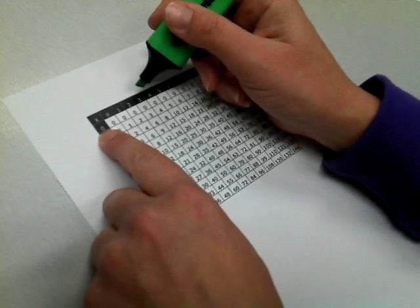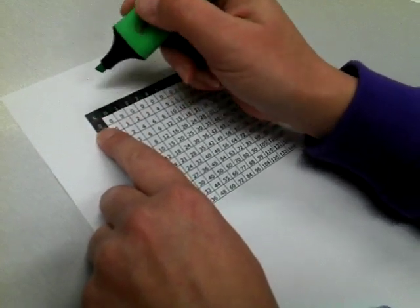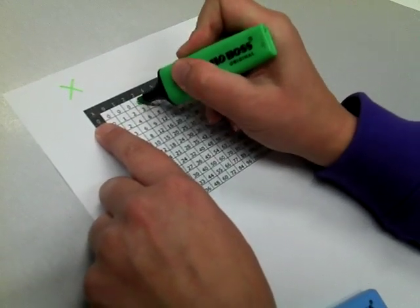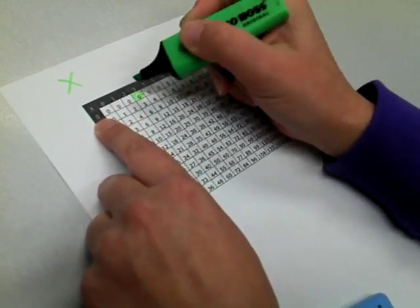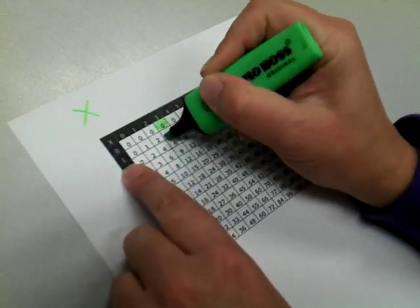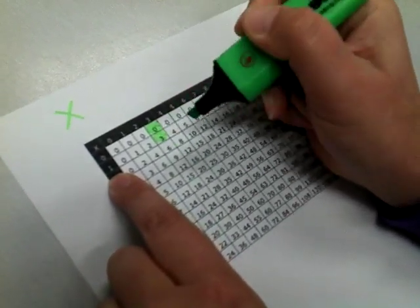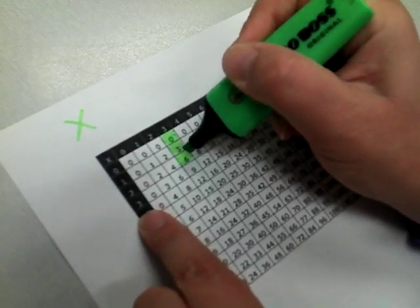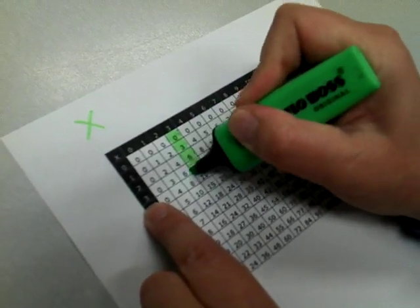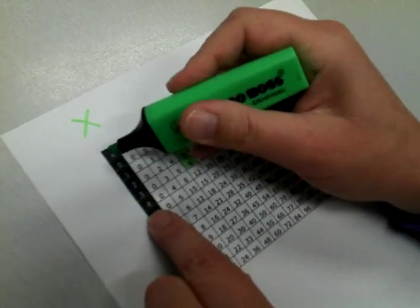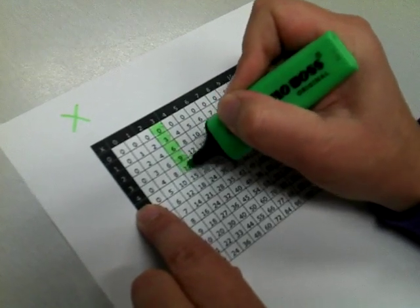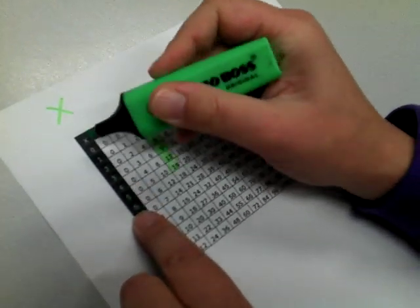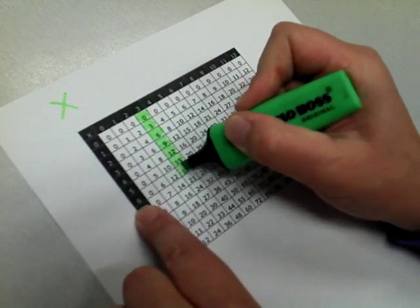and I go zero, so we've got our multiplication times symbol. Zero times three equals zero, one times three equals three, two times three equals six, three times three equals nine, four times three equals twelve, five times three equals fifteen, six times three equals eighteen.